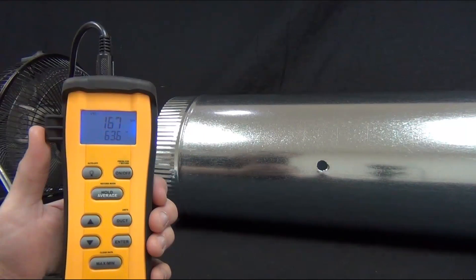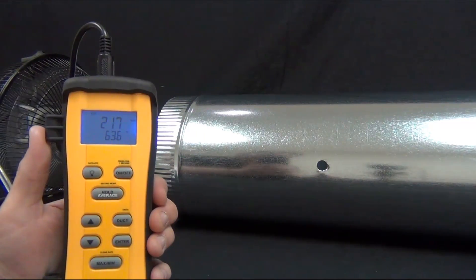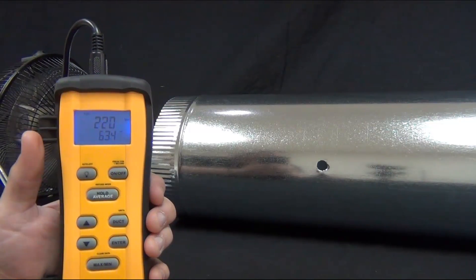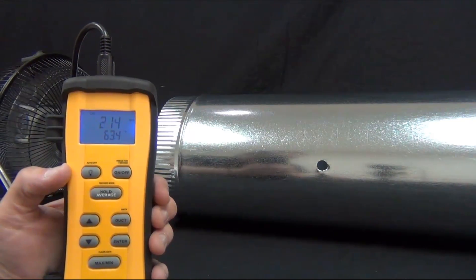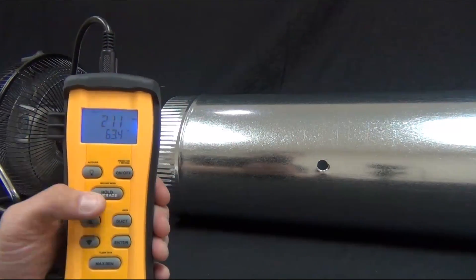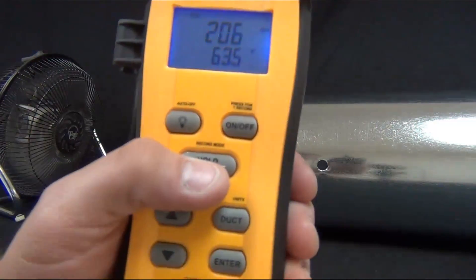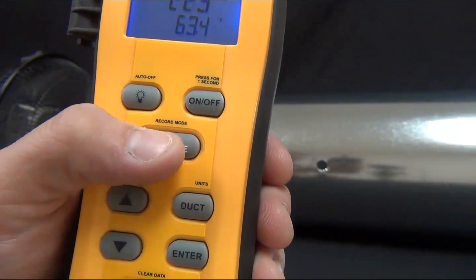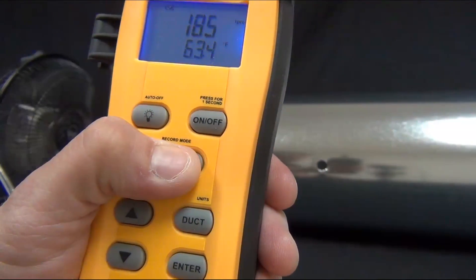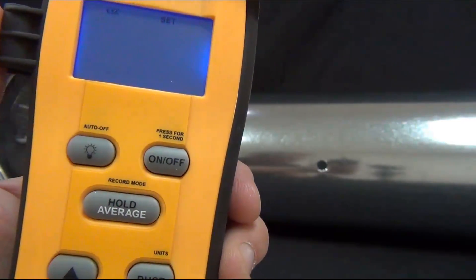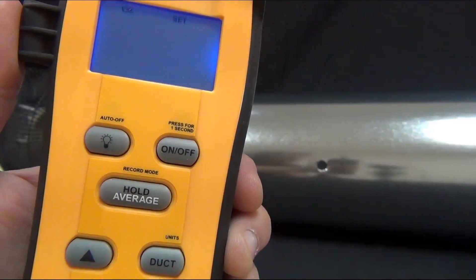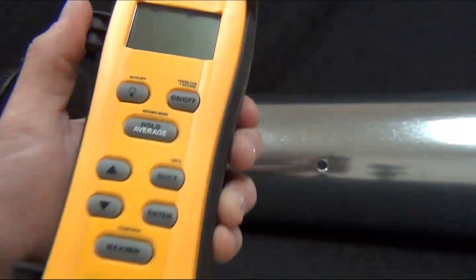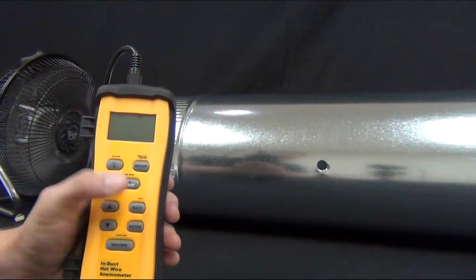The main function of the STA-2 is to get an accurate average CFM across the duct. The STA-2 does this in a couple different ways. The first way I'm going to show you is a timed average. To get into record mode, you press the button above where it says record mode, the hold average button. You'll see that little stopwatch blinking. That is the signal for a timed average. I'm going to press enter to select that.